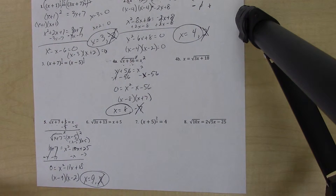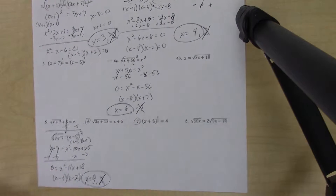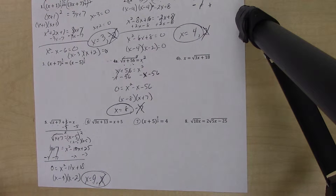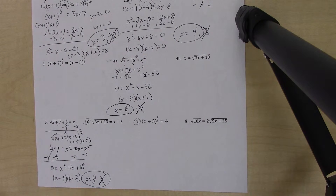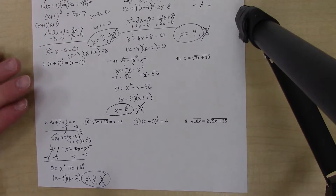It doesn't always work out that one answer is extraneous. For problems six and seven, you will get answers that both work — I want you to plug them in and check just to see. Go ahead and work through the remaining problems and come back and check your work when you're done.